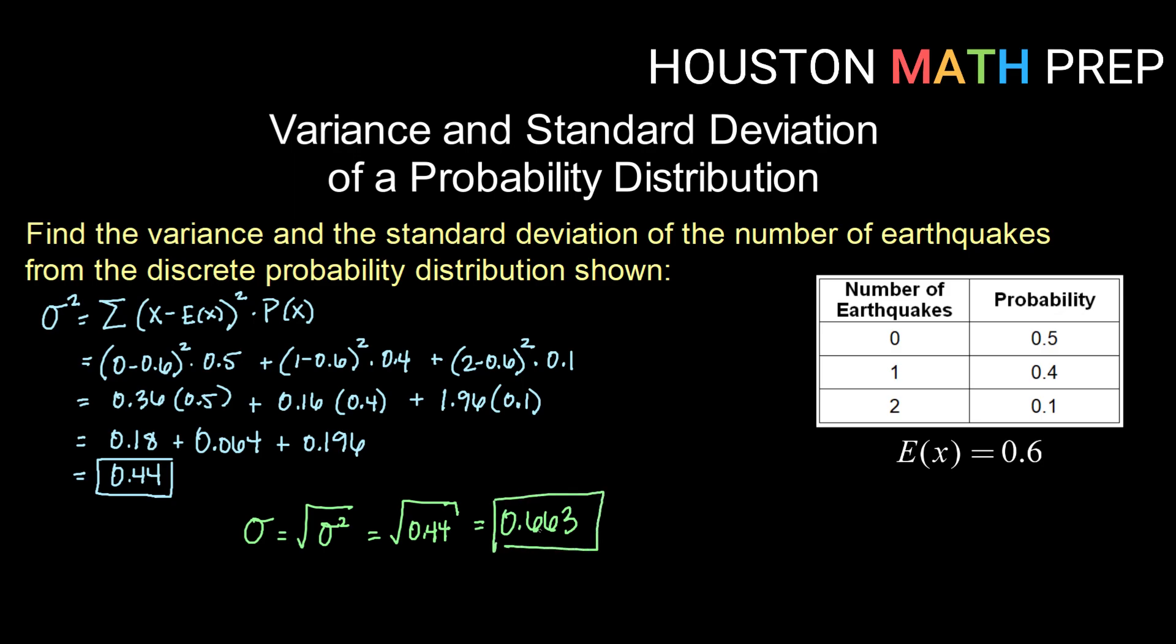So a standard deviation of 0.663 tells us that while our mean is 0.6, we can expect a standard deviation from that in a given year of 0.663.